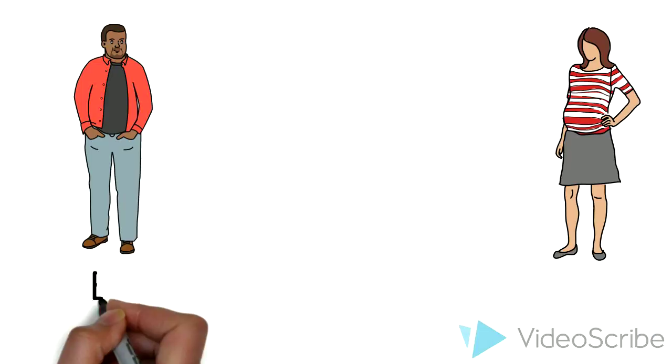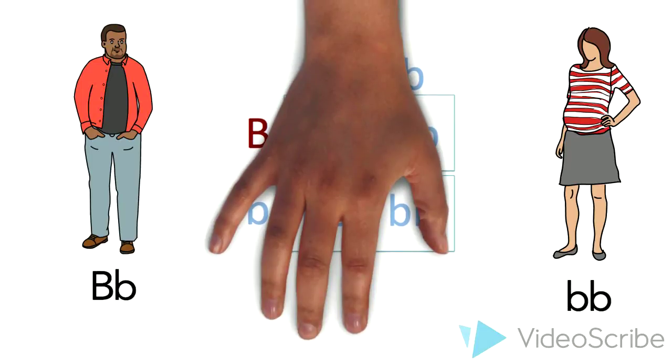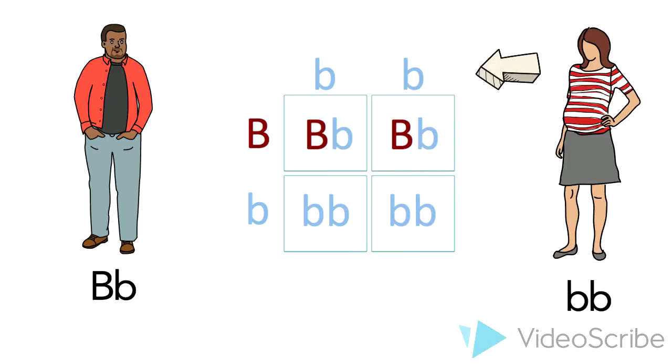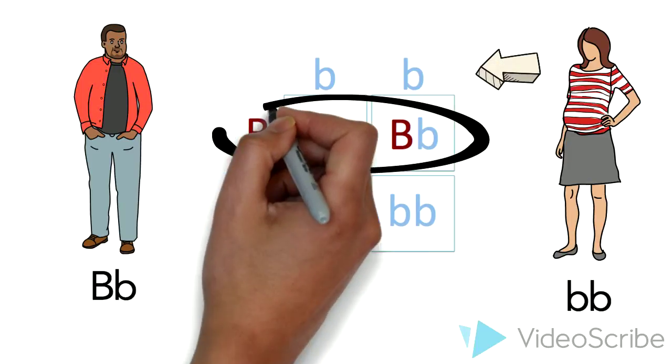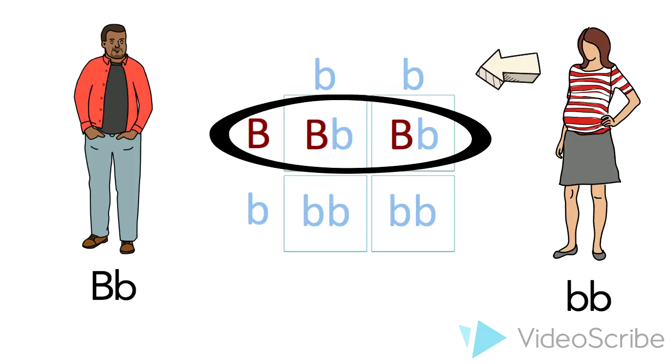If your father passed on his brown allele, even though your mother can only pass on the allele for blue, it will never be expressed. Why? Because the brown eye color is dominant to the blue eye color. When would it be expressed? The only situation in which you would have blue eyes is if both your parents passed on the blue allele.